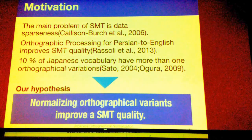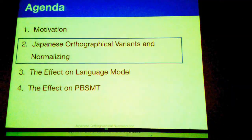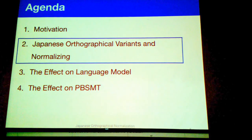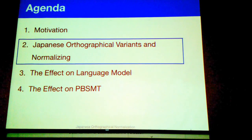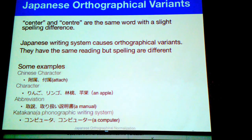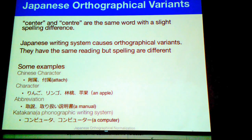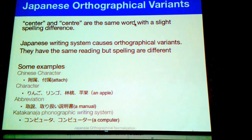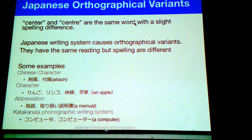This is our hypothesis. Next, I'll introduce what Japanese orthographical variance is and how we normalize it. Japanese orthographical variance refers to the same word written with slightly different notation — like the English words 'center' and 'centre.' Japanese writing systems cause orthographical variance. In Japanese, there are four kinds of writing systems.